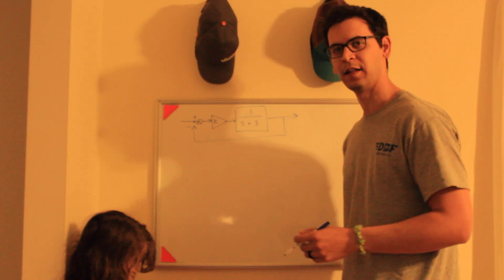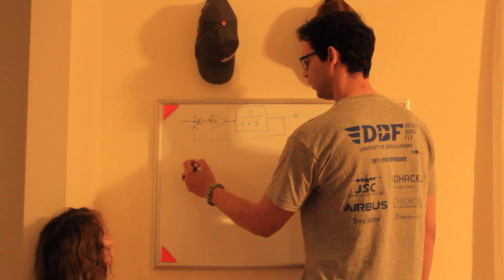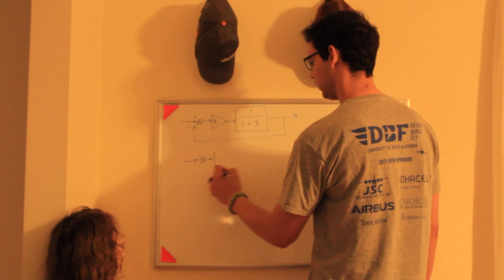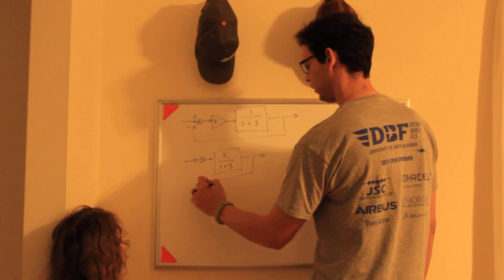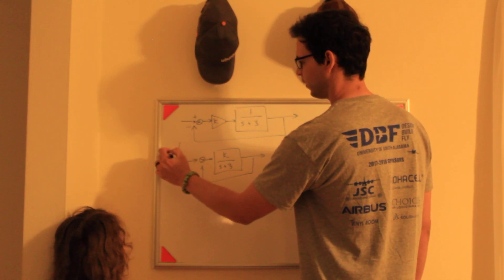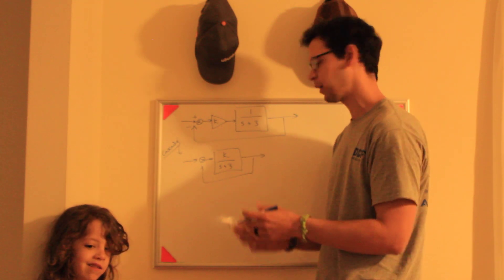I'm going to cascade these two blocks together, so I get K over s plus 3. That's the cascade. After I do the cascade, then you apply the feedback rule.